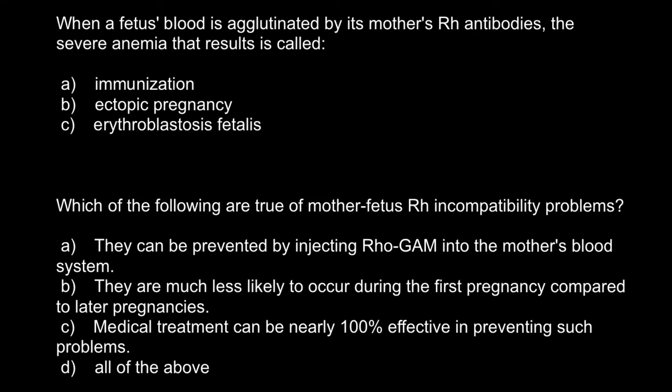Immunization is not the correct answer — it is not the name of the disease, so we can cross out Answer A. Answer B, Ectopic pregnancy, occurs when a fertilized egg attaches anywhere except the uterus, for example in the fallopian tubes. Such a pregnancy is called ectopic pregnancy and may be life-risking for the mother's health, so we can cross out this answer as well.